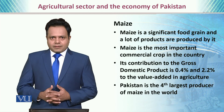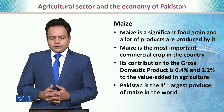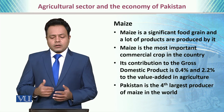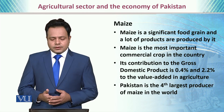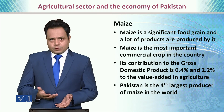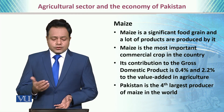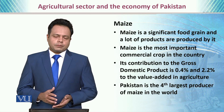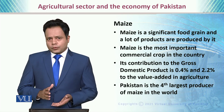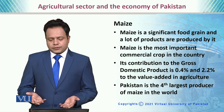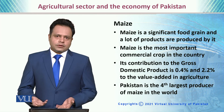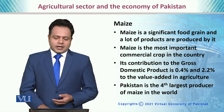Then we have maize, which is a significant food grain and a lot of products are produced from it. It is the most important commercial crop in the country, contributing 0.4% to GDP with 2.2% of value-added products. Pakistan is the fourth largest producer of maize in the world.